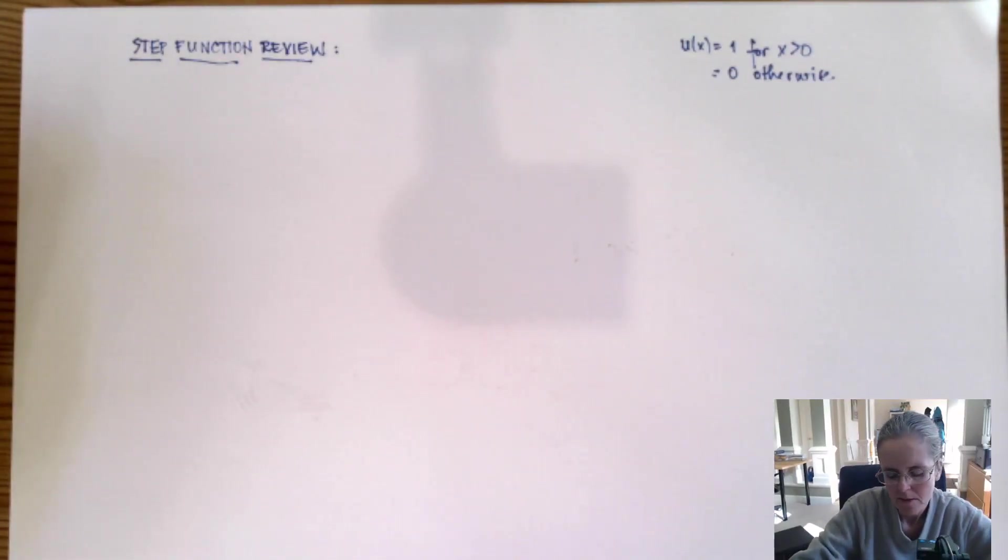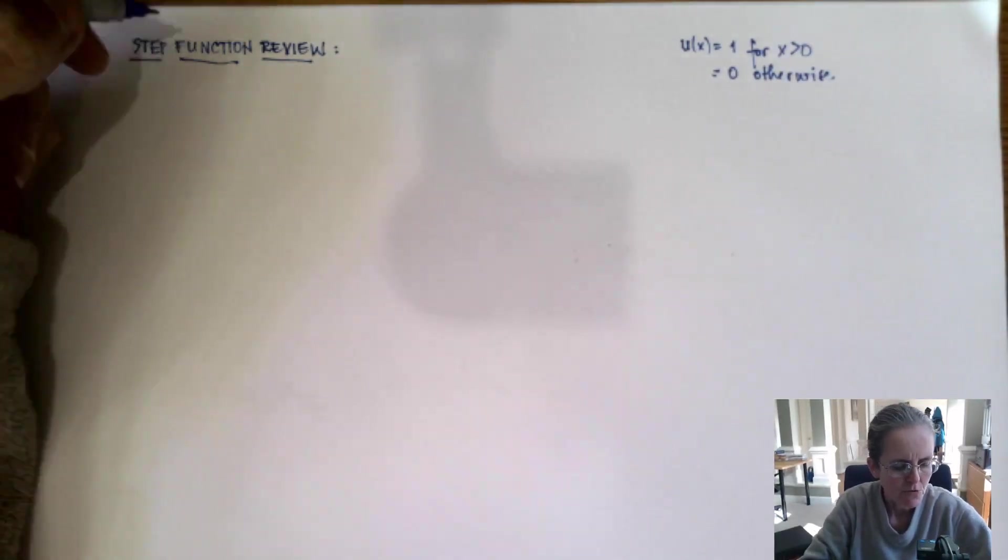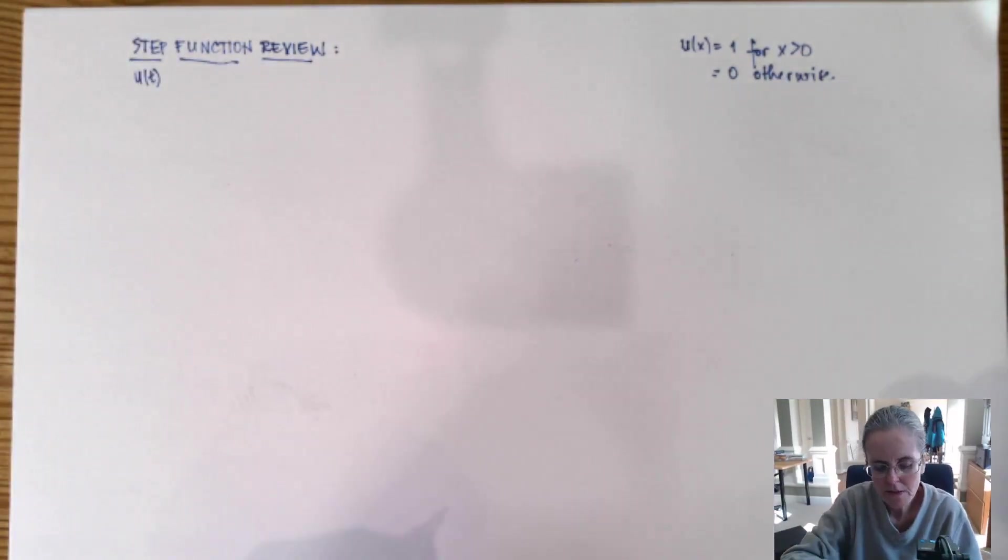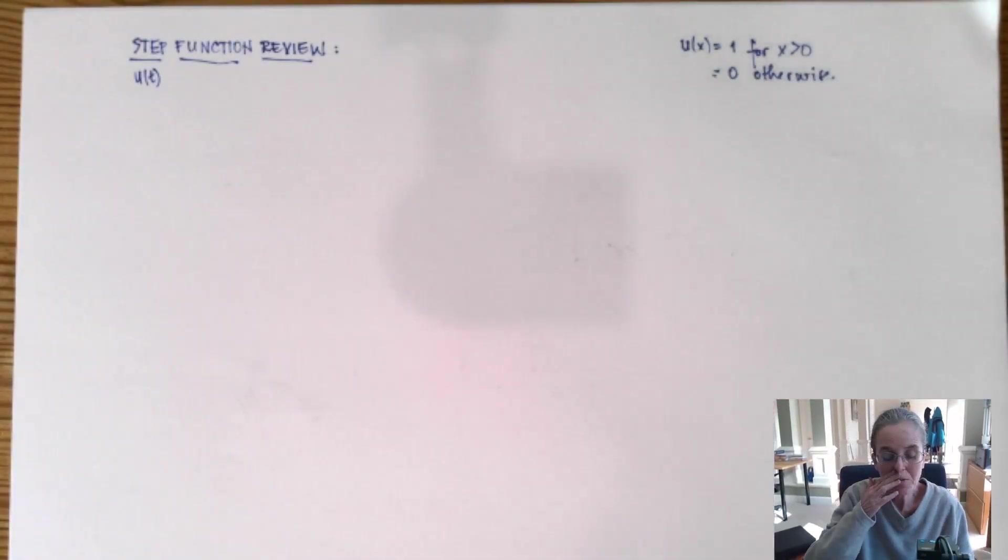Hi there everybody, one student asked me for a video on step functions which traditionally we learned as u of t, but more generically as u of x. If you want to plot u of x, you plot everything as one for x larger than zero and zero everywhere else, which is for x less than zero.